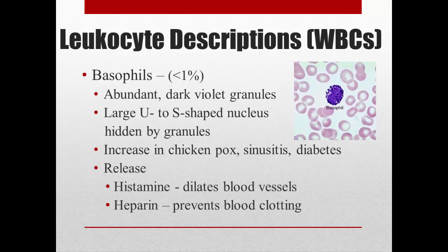Basophils are another granulocyte with dark violet granules — in fact, there are so many granules that it's hard to see the U- or S-shaped nucleus hidden inside. We see basophils increase in chickenpox, sinusitis, and diabetes. They're also related to allergic reactions because they secrete histamine, which causes blood vessels to dilate and become leakier, producing more fluid — hence the runny nose in an allergic or hay fever response. They also release heparin, which prevents blood clotting so it doesn't interfere with cells mobilizing to fight infection.